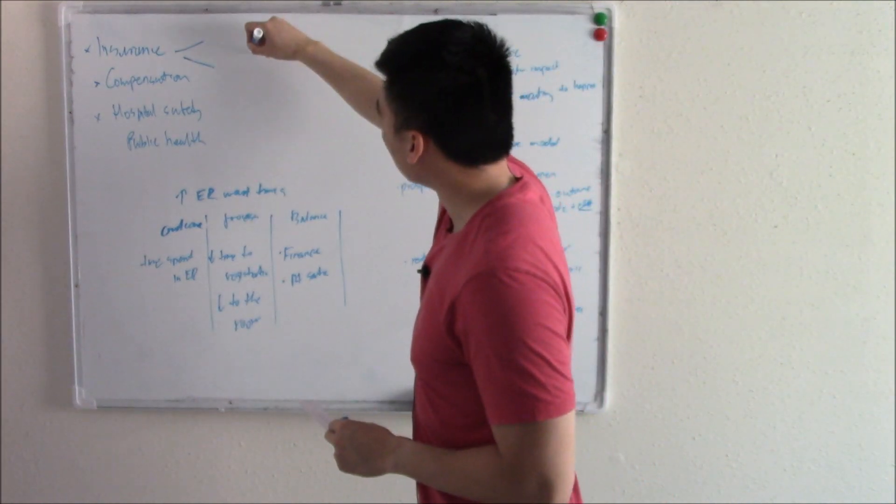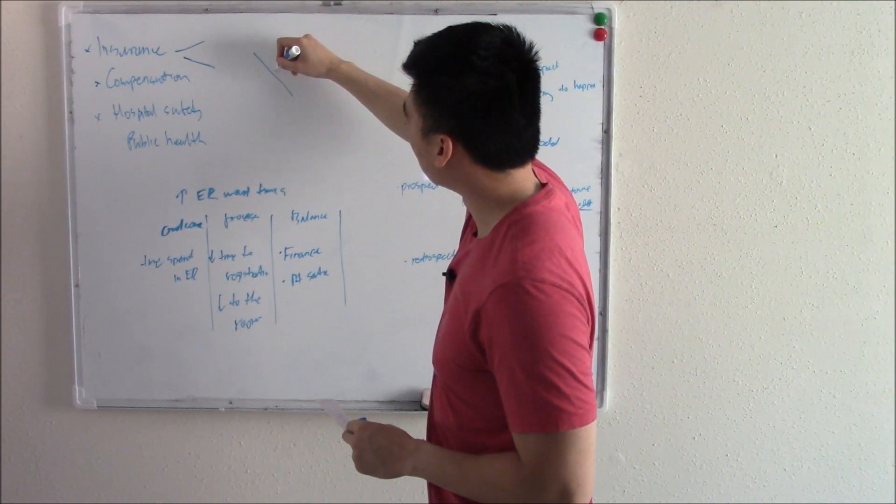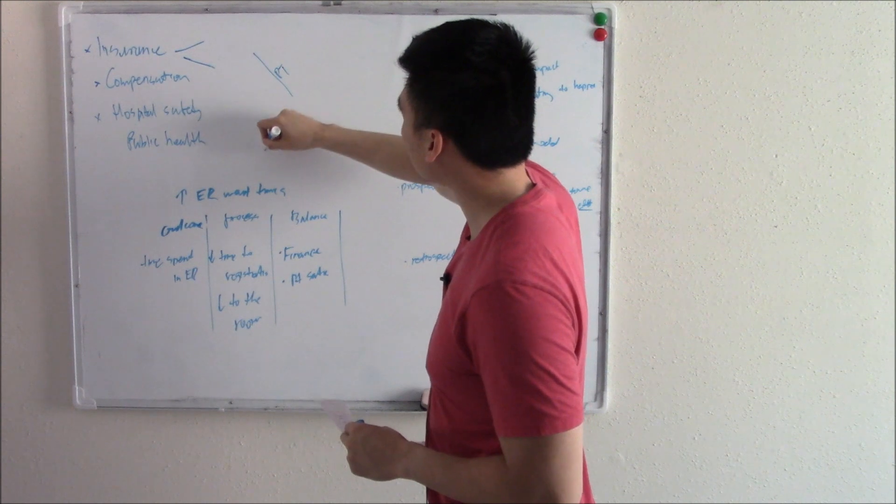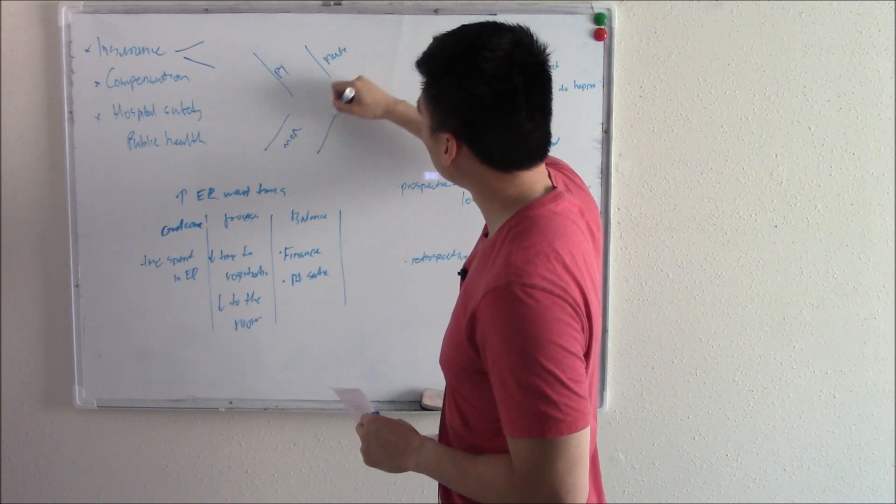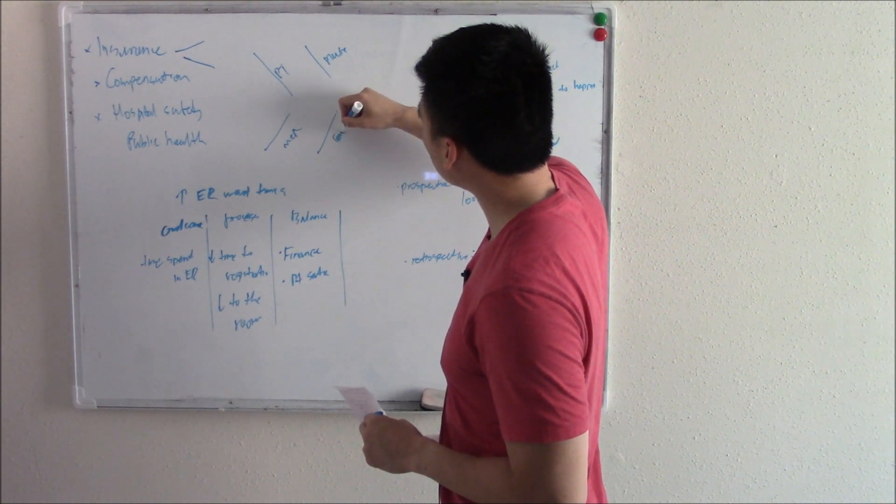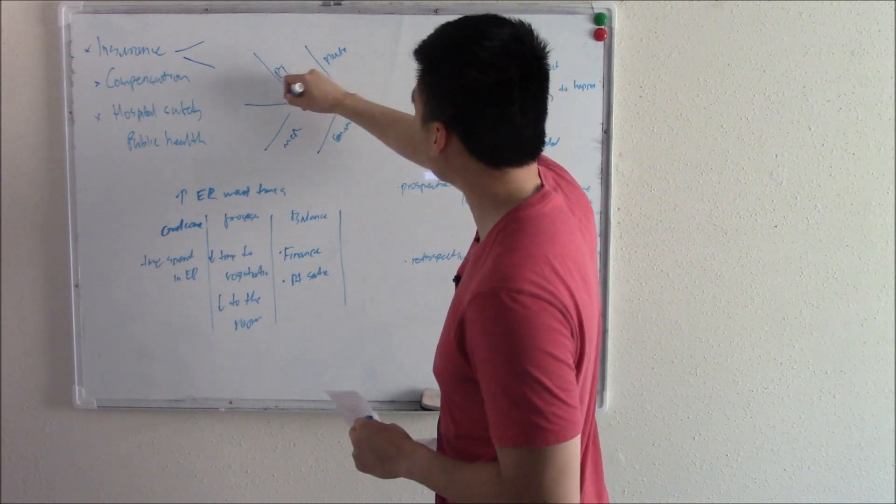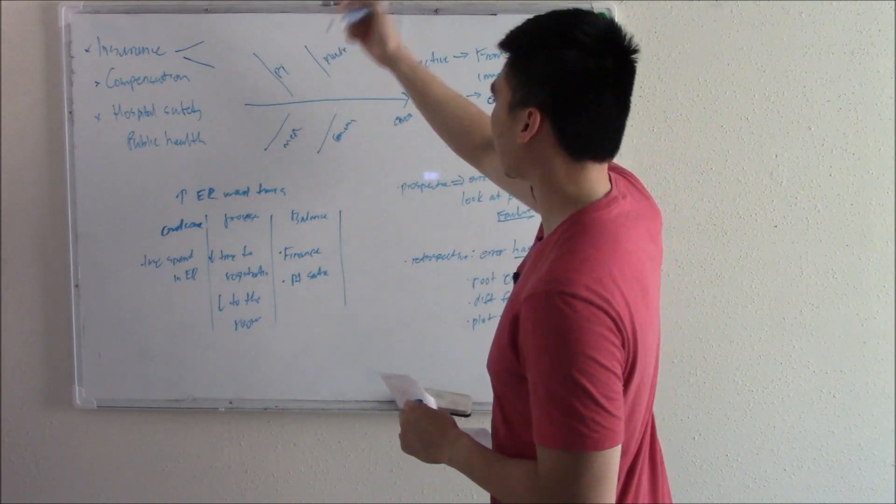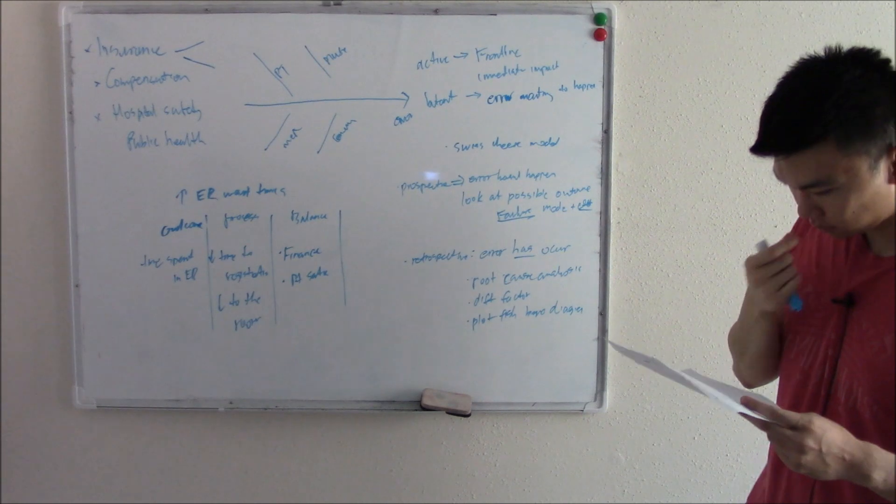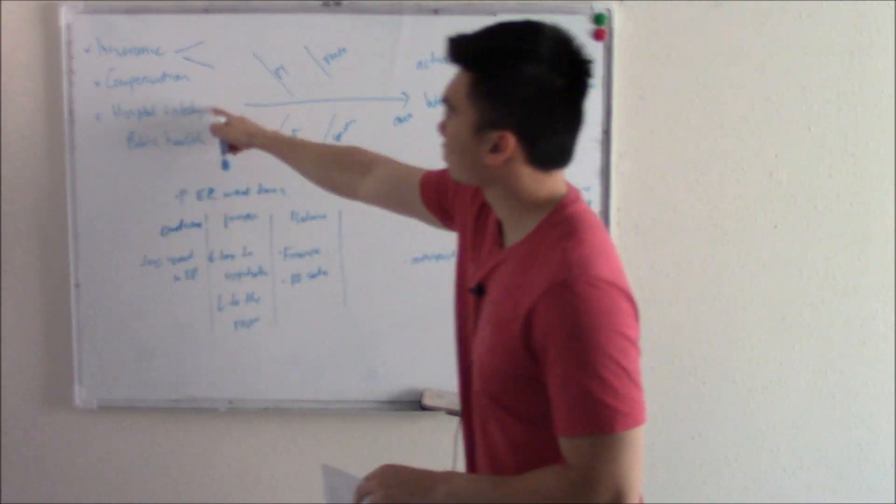So you look at all the different factors and oftentimes we plot it on a fish bone diagram. What the heck is a fish bone diagram? We said there's a lot of different factors. So this factor might be the PT. This factor might be the medication. This factor might be the nurse. This factor might be communication. And all these factors come together when the stars align and make the error. Looks kind of like a fish bone, doesn't it? That's a fish bone diagram. That is hospital safety.